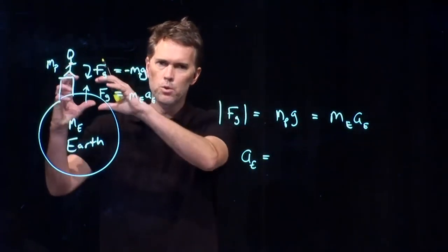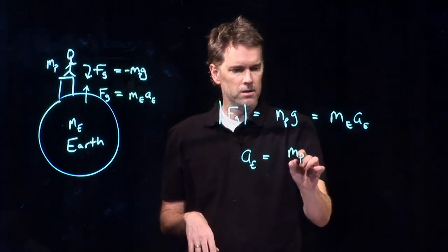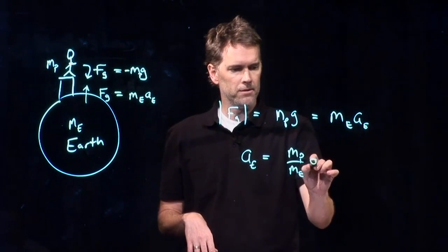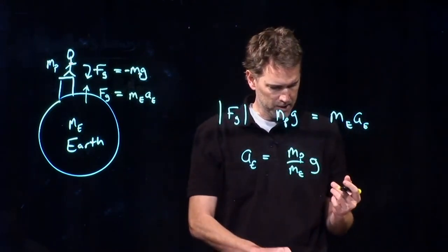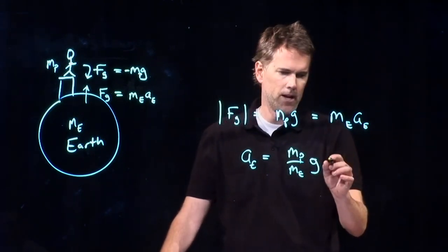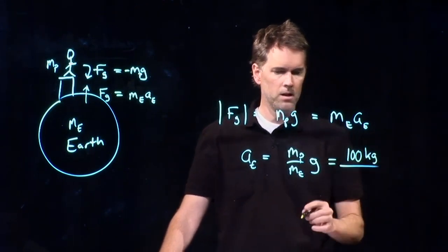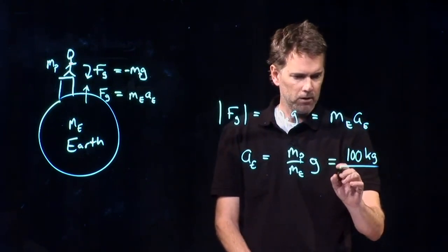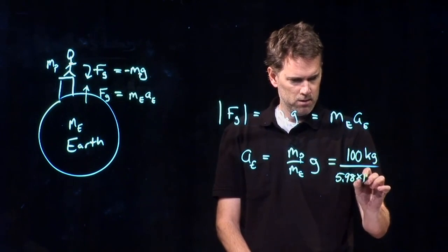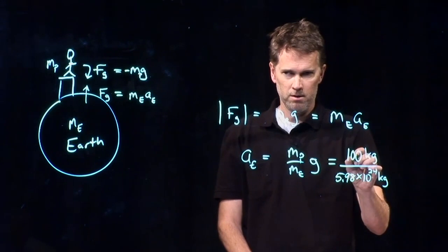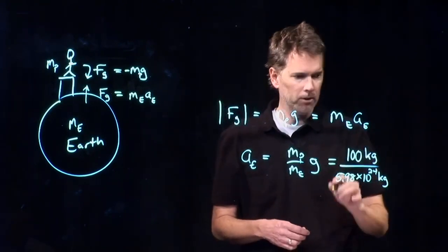Now you can solve for the acceleration of the earth — how much does the earth actually accelerate up when you jump off this building? Dividing by m-sub-e gives: acceleration of earth equals mass of person over mass of earth, times g. Let's try this for a human being. A pretty big human being would be 100 kilograms. The mass of the earth is 5.98 times 10 to the 24 kilograms — that's about 22 orders of magnitude bigger than 100. So we suspect this is going to be a pretty small number.